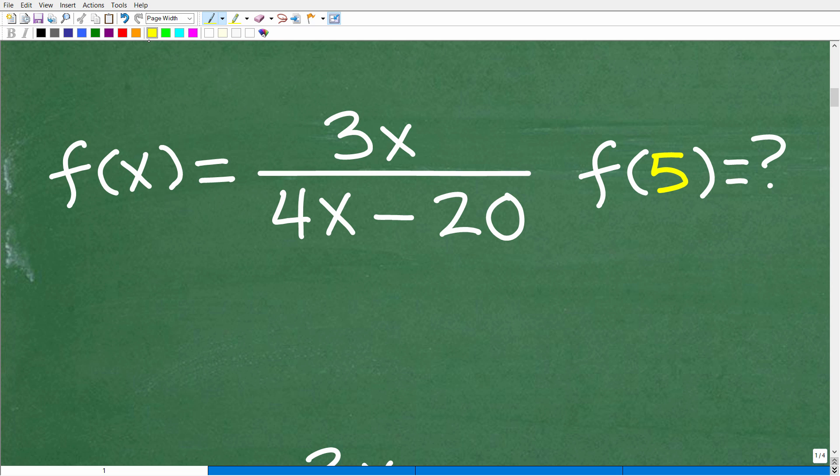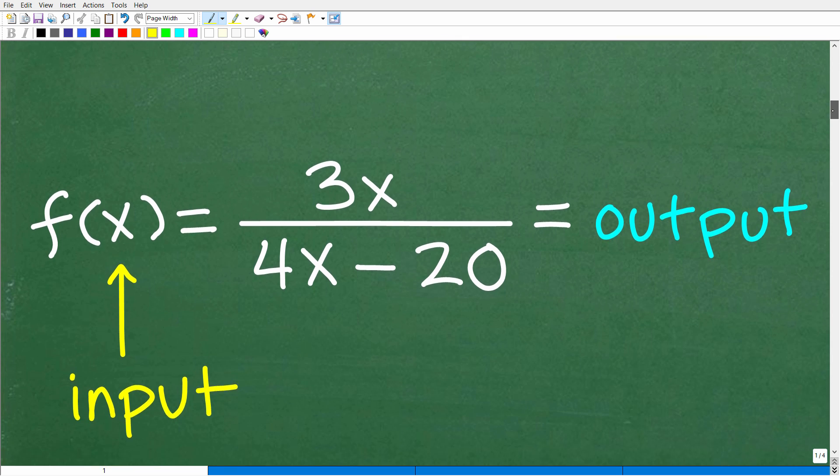All right, so f of x is equal to 3x over 4x minus 20. Again, we want to figure out what happens when we evaluate this function for f of 5. But before we take a look at this, let's just kind of review some basic concepts about functions.